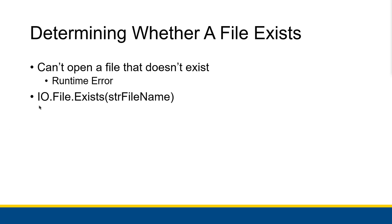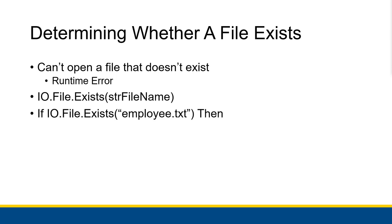The IO.File.Exists method returns a Boolean value — it's true if the file with the filename you pass in does exist, and false if it doesn't. So you can use it in an if statement like this: If IO.File.Exists("employee.txt") Then, and then you do all of the processing of that file underneath it. That is what you always want to do when doing file I/O.